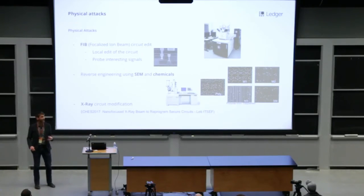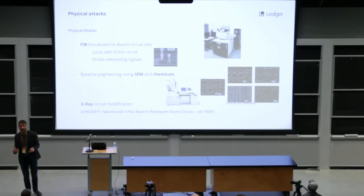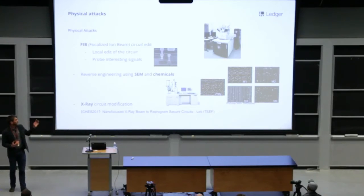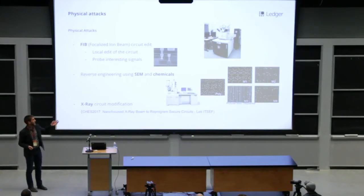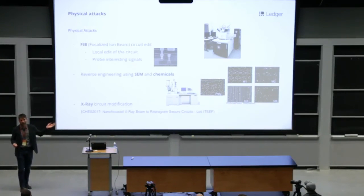Just a quick word on physical attacks. Here's a FIB. This machine is used for defect analysis during the IC manufacturing, but this machine can also be used to mount an attack. With this machine, we can edit very locally a circuit and then probe interesting signals. So that means the attacker will be able to probe the signals connected to the register of key or maybe of the pin registers and so on. So this is very efficient, but this machine is very costly. It costs more than $1 million and it requires also the attacker to have a good expertise, but in the field attacks using this machine exist.